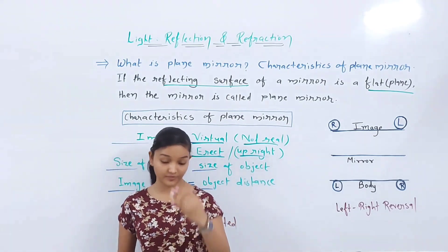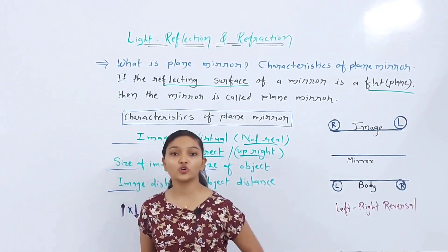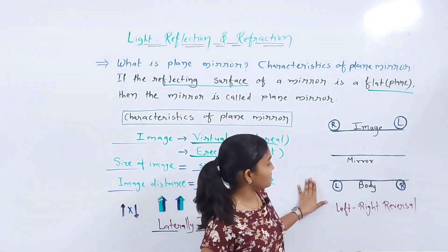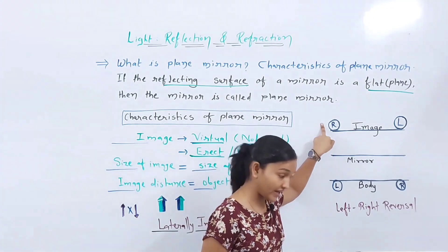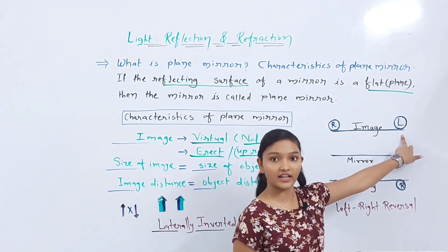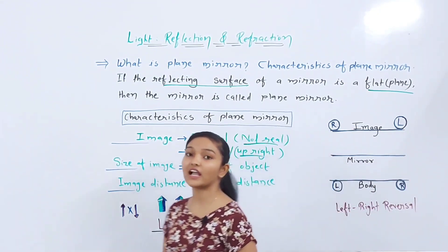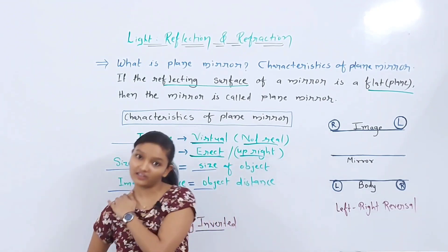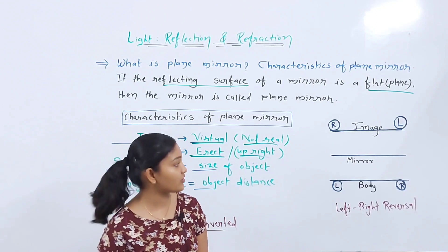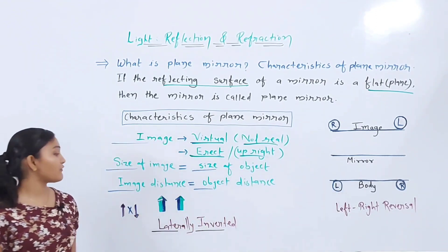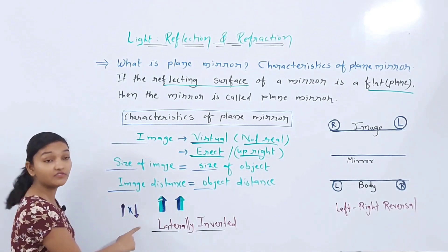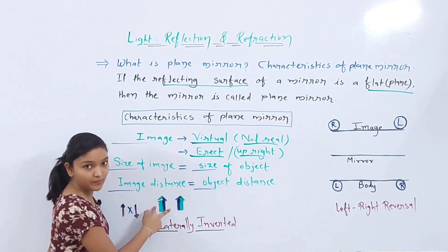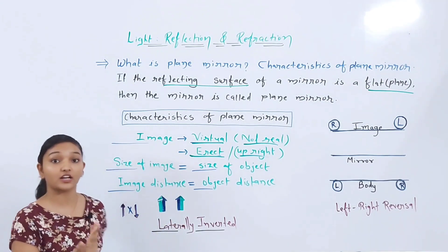In a plain mirror, when you stand in front of the image, the left part appears as the right and the right part appears as the left. If it is your left hand, the mirror shows it on the right; if it is your right hand, it shows it on the left. We call this left-right reversal. The image is laterally inverted, meaning it is horizontally reversed — it is not vertically inverted.